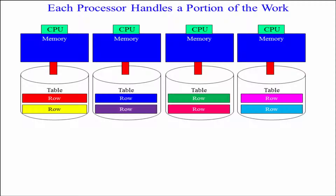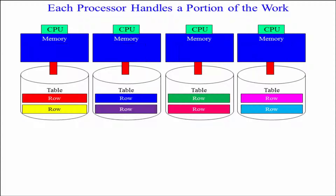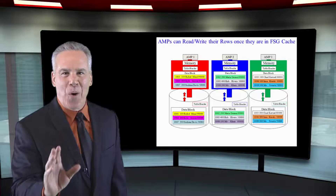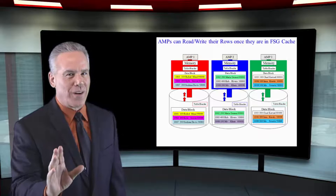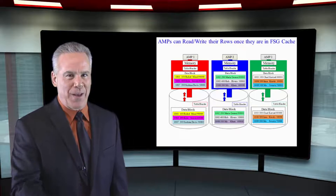The parsing engine told each one of these AMPs to read their data blocks, and each one of them brought it off the disk into memory, and then like lightning we can read it. That's the way it always works.